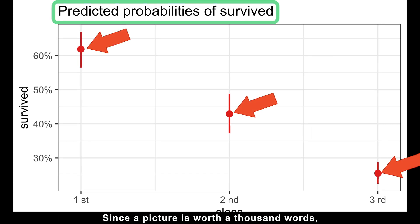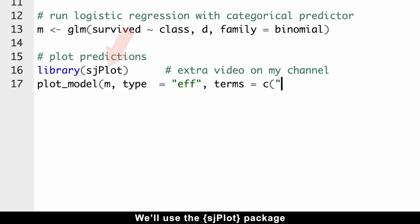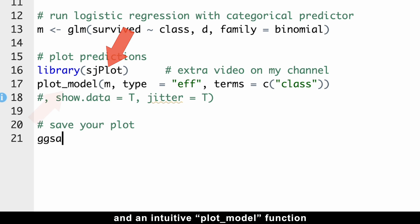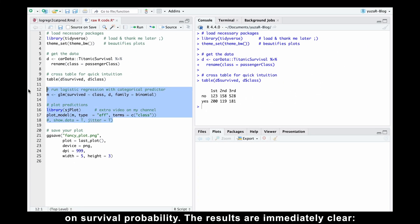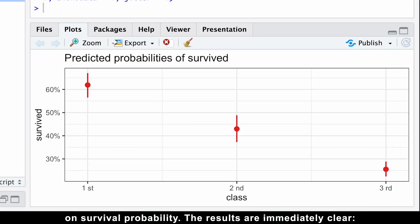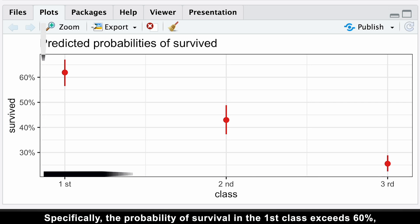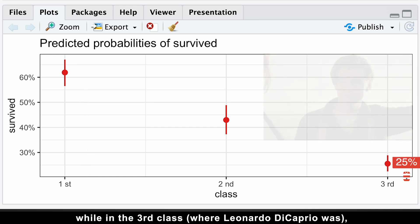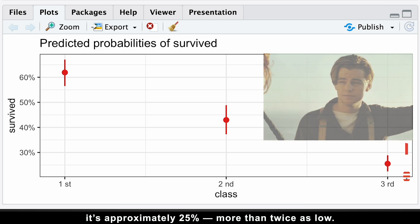Since a picture is worth a thousand words, let's start by visualizing the model results. We'll use the sjplot package and an intuitive plot model function to display the effect of the passenger class predictor on survival probability. The results are immediately clear. The higher the class, the greater the chances of survival. Specifically, the probability of survival in the first class exceeds 60%, while in the third class, where Leonardo DiCaprio was, it's approximately 25%, more than twice as low.